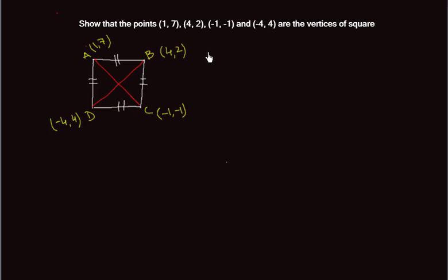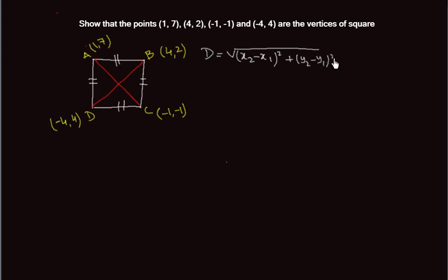To find the distance we use the formula: distance equals the square root of (x2 minus x1) squared plus (y2 minus y1) squared.